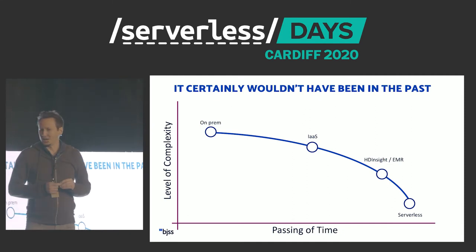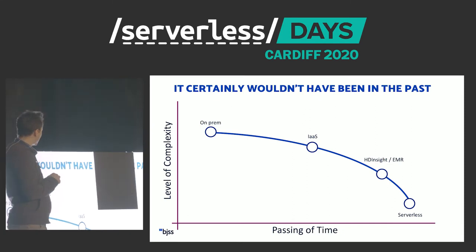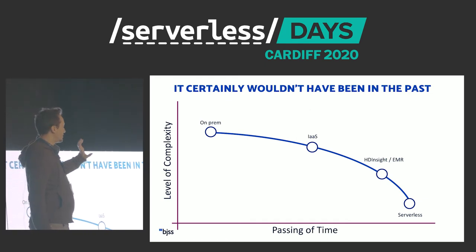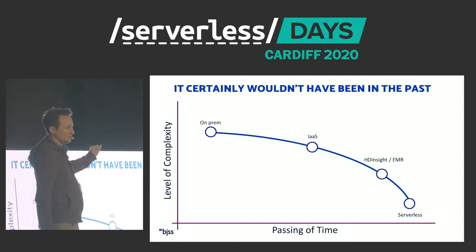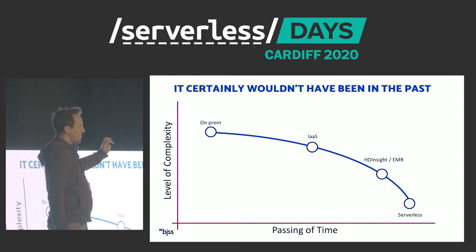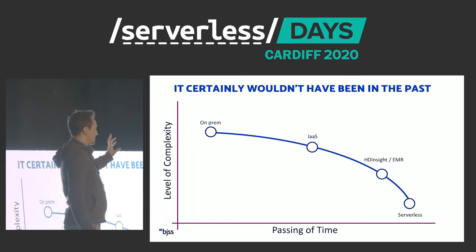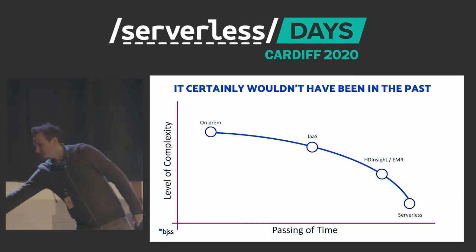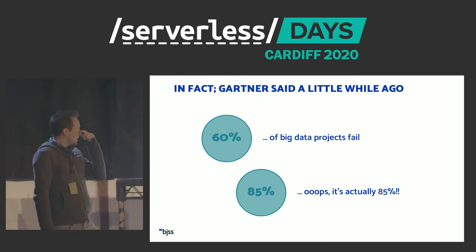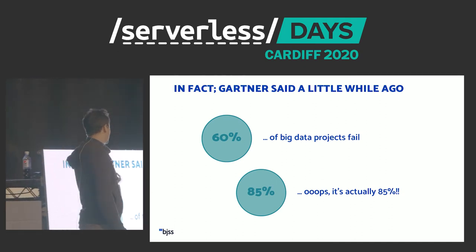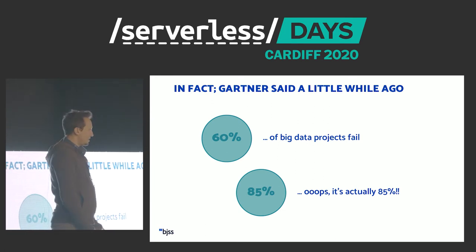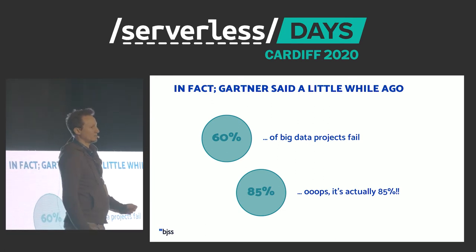We were talking last night, and my colleague Dani pointed out that on a project she's working on, they started with a vision of setting up EMR and Apache Airflow to do some ETL, but it didn't take long before they moved to AWS Glue because of the need to get things out quickly versus very long lead times. Gartner said 60% of big data projects fail, and that was later revised to 85% of big data projects fail.